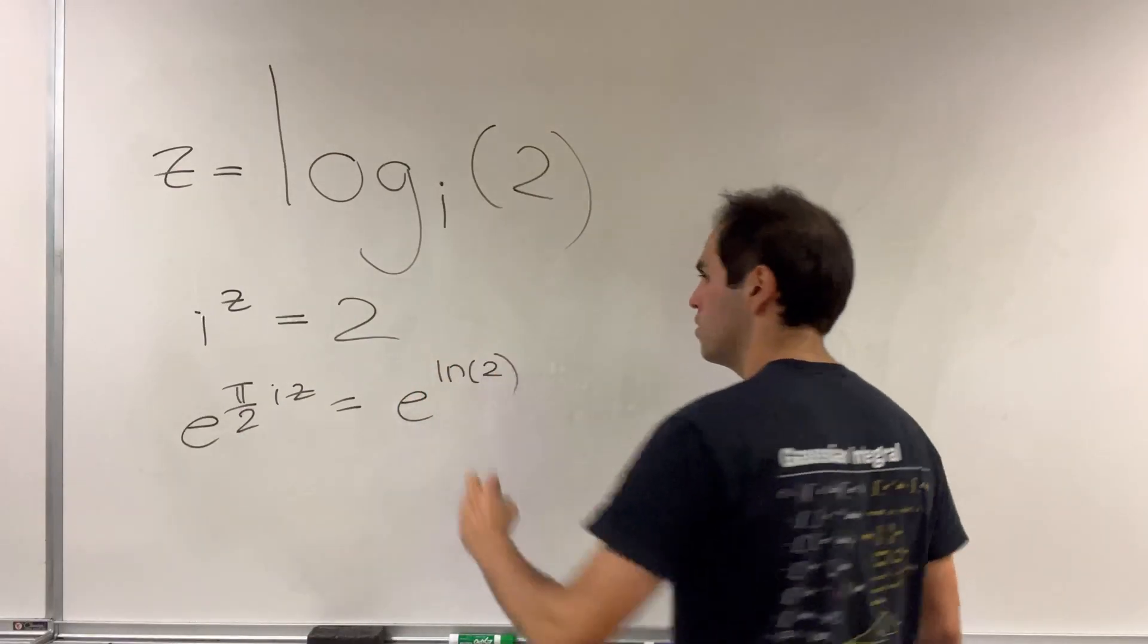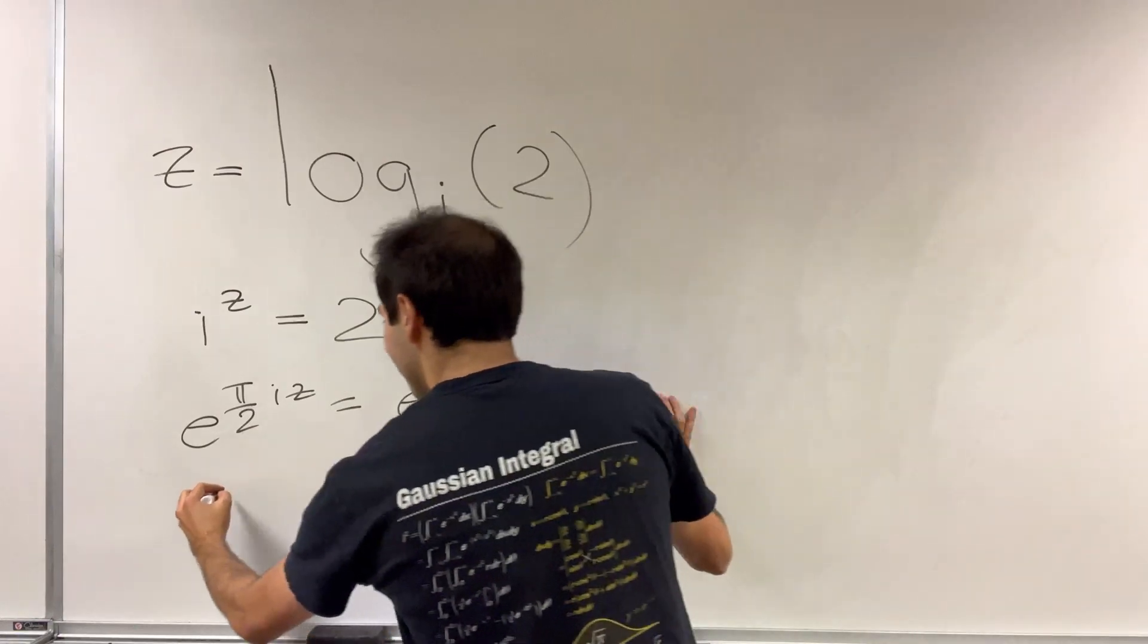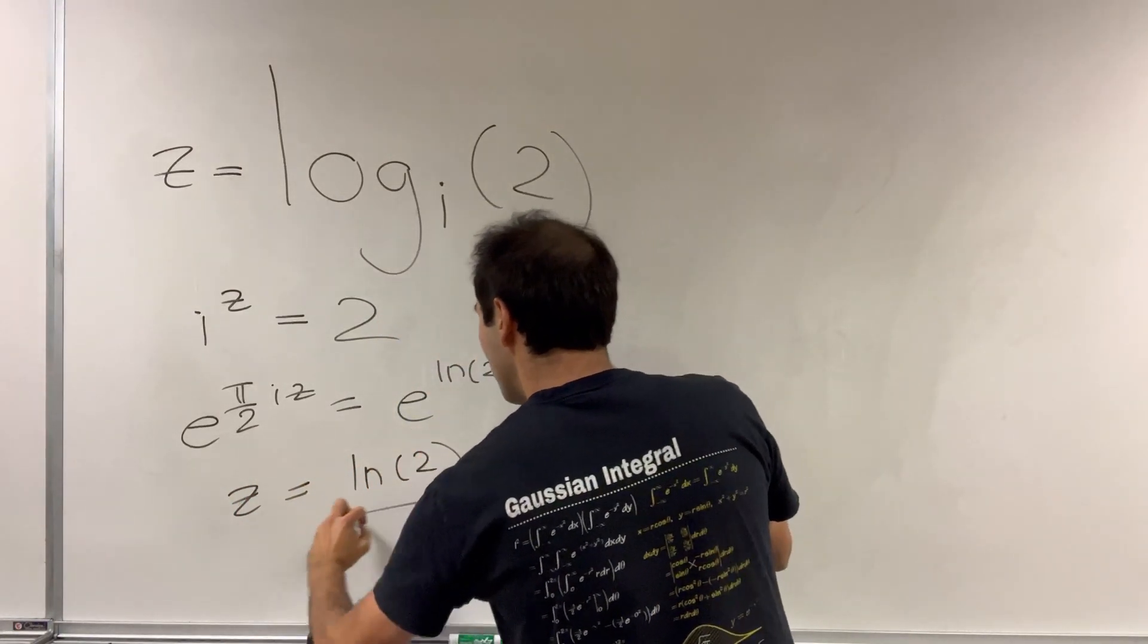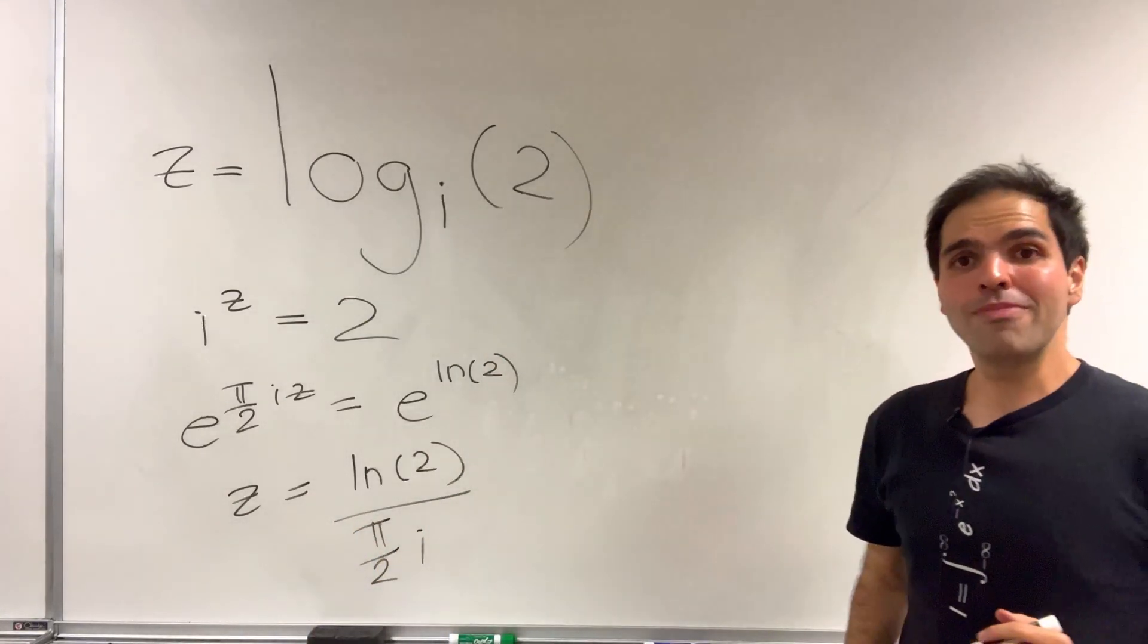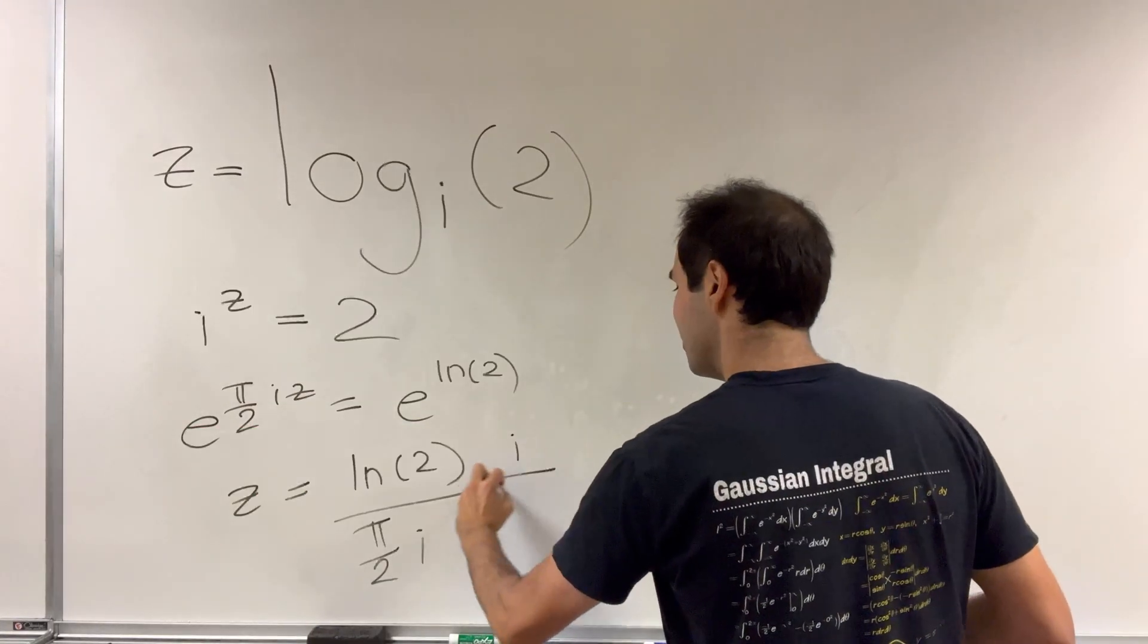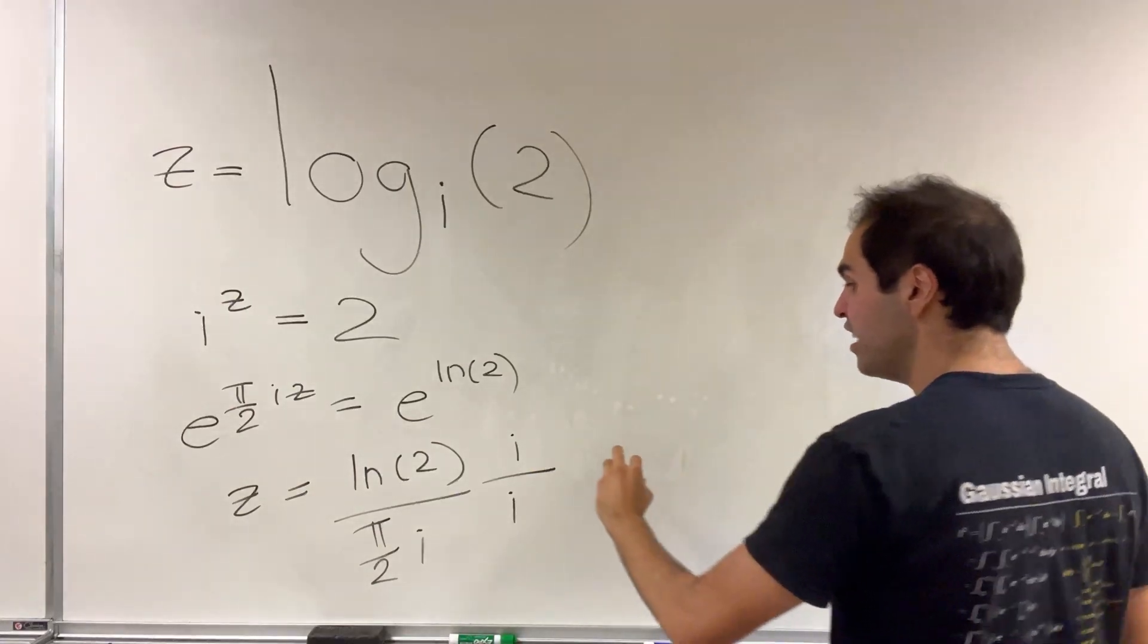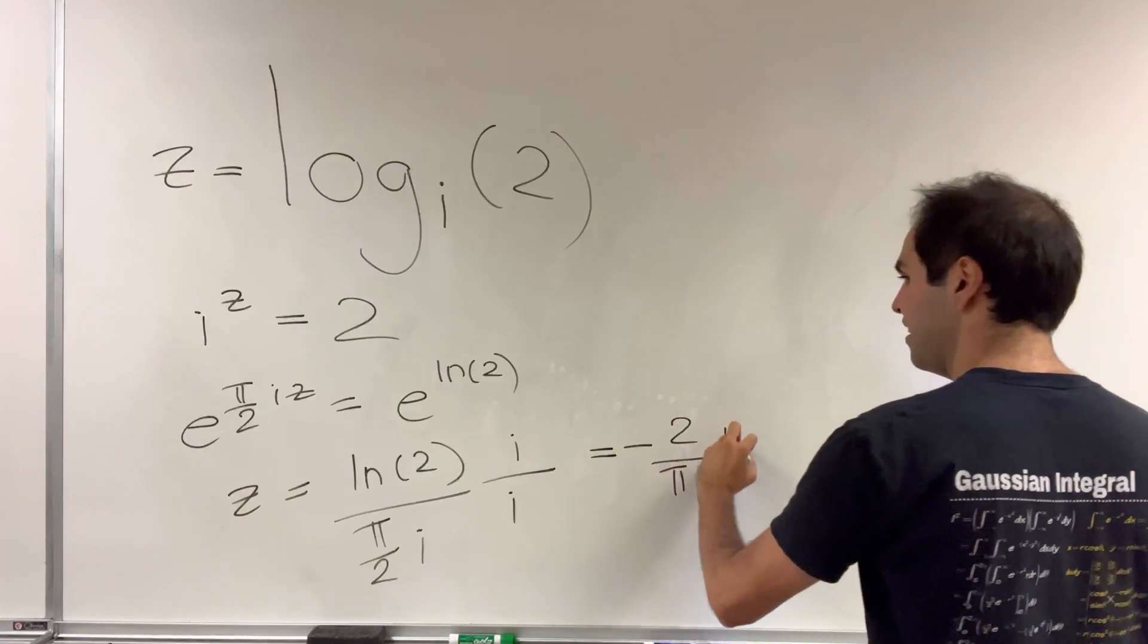Plus 2 pi m i, and z is just ln of 2 over pi over 2i. But remember, i don't like to be on the bottom, so multiply top and bottom by i, and you end up getting minus 2 over pi ln of 2i.